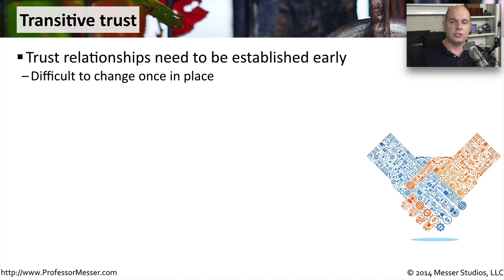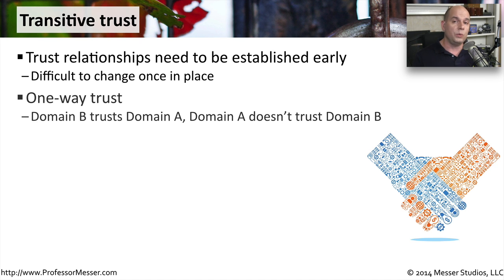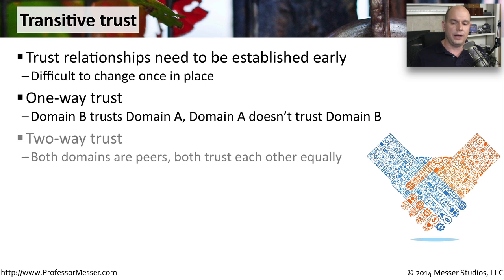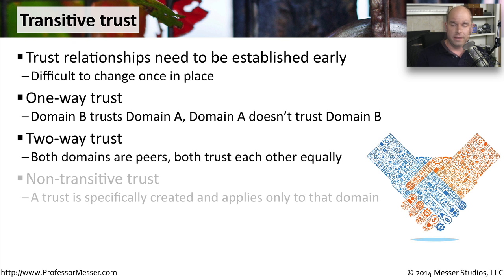There's something called a one-way trust, where domain B would trust domain A, but the other way around doesn't work — domain A does not trust domain B. You might also find two-way trusts, where both domains are equal peers with each other and they both trust each other equally.